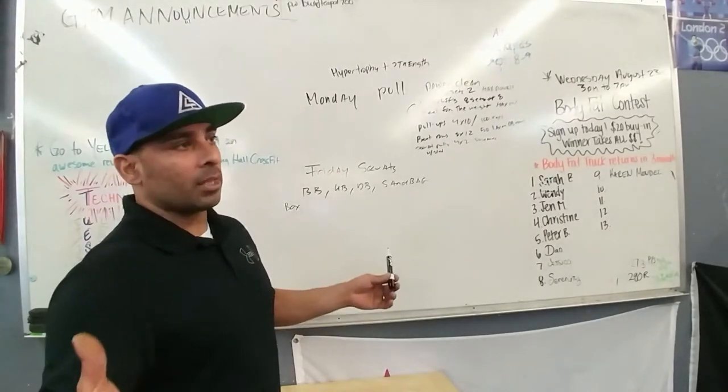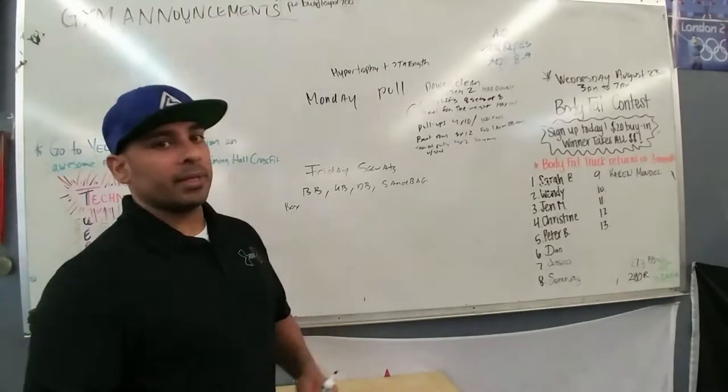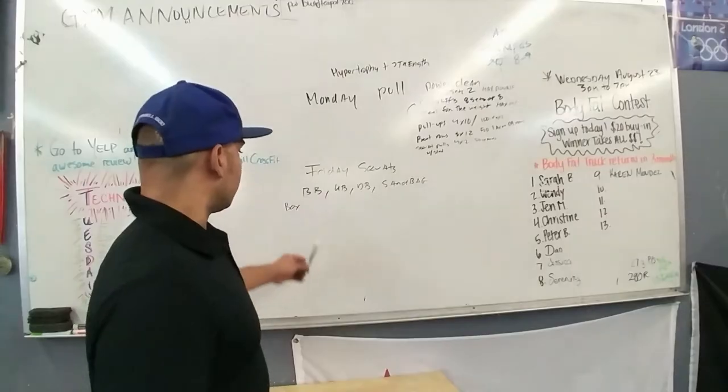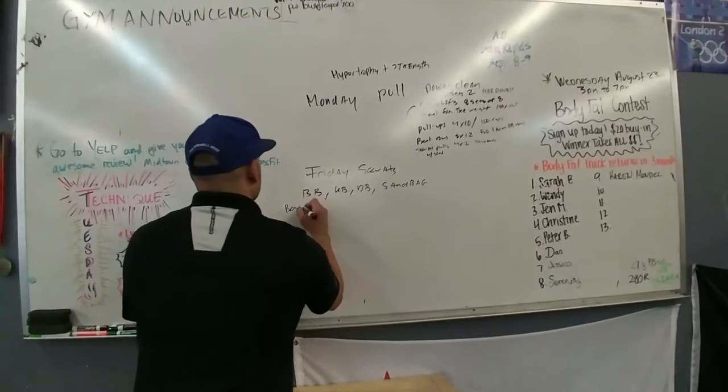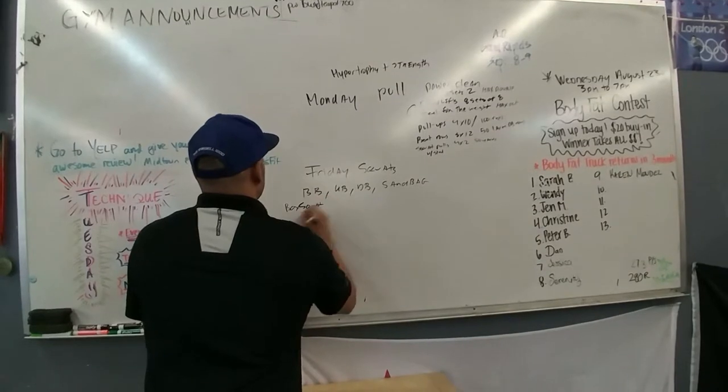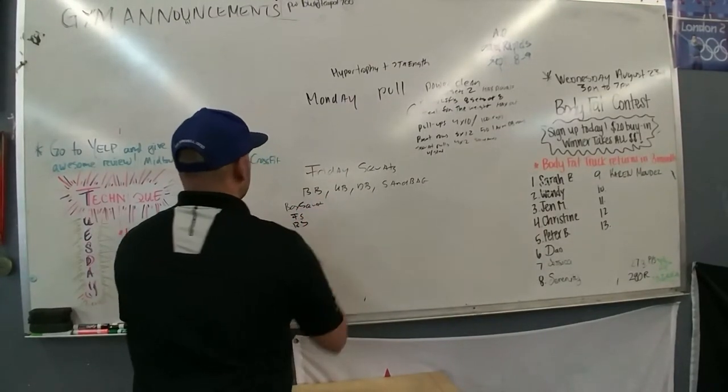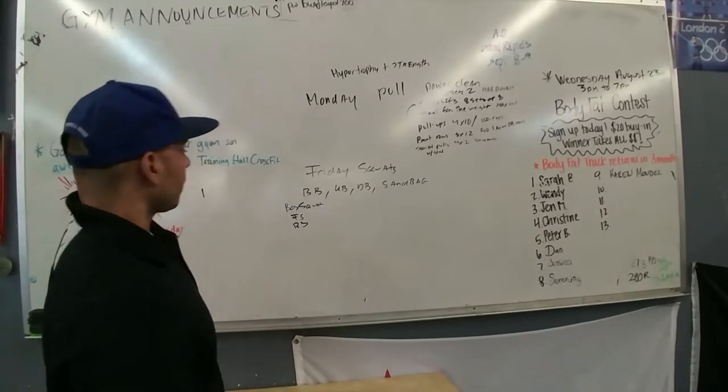But this shouldn't make that hard. You should go to the box squat okay. But when you get to some serious, serious weight, if you can, you can use a monolift. So box squat. We can do a box squat. Front squat. Back squat. Right there.